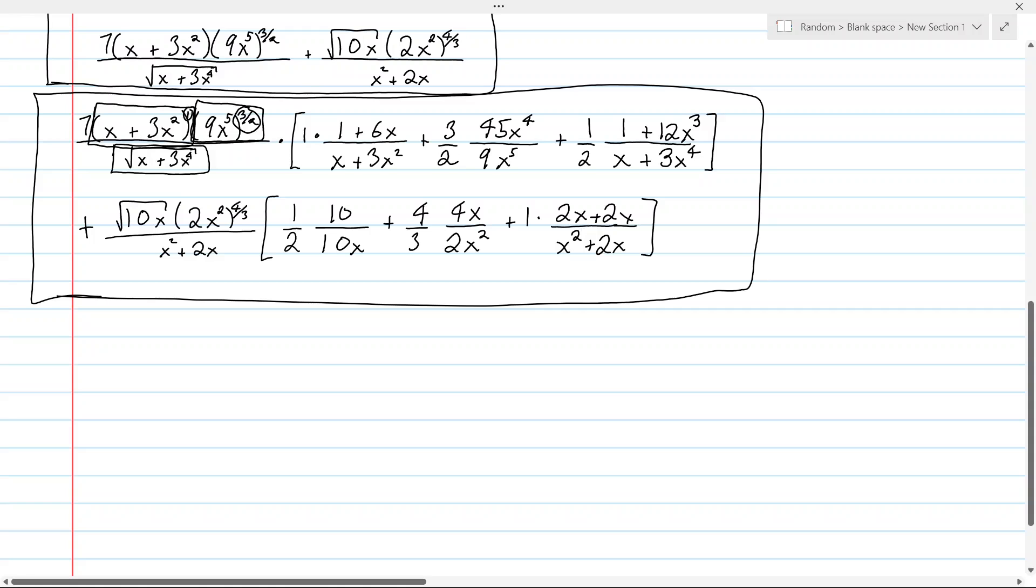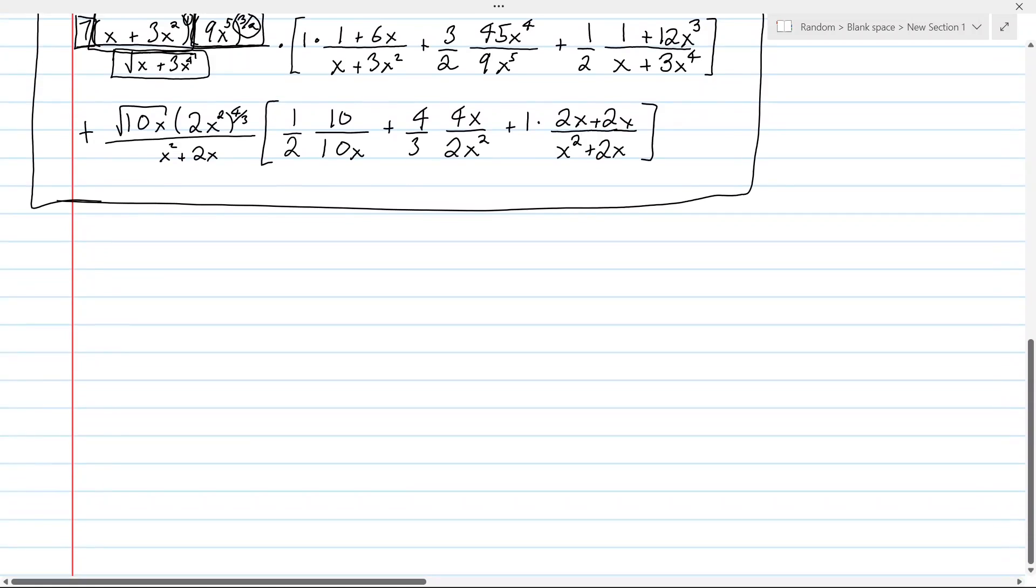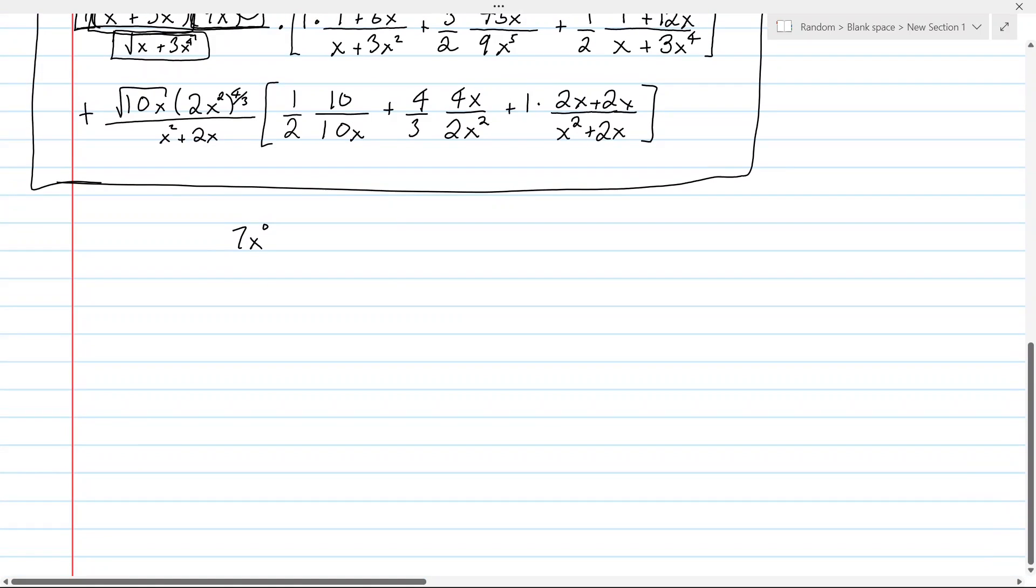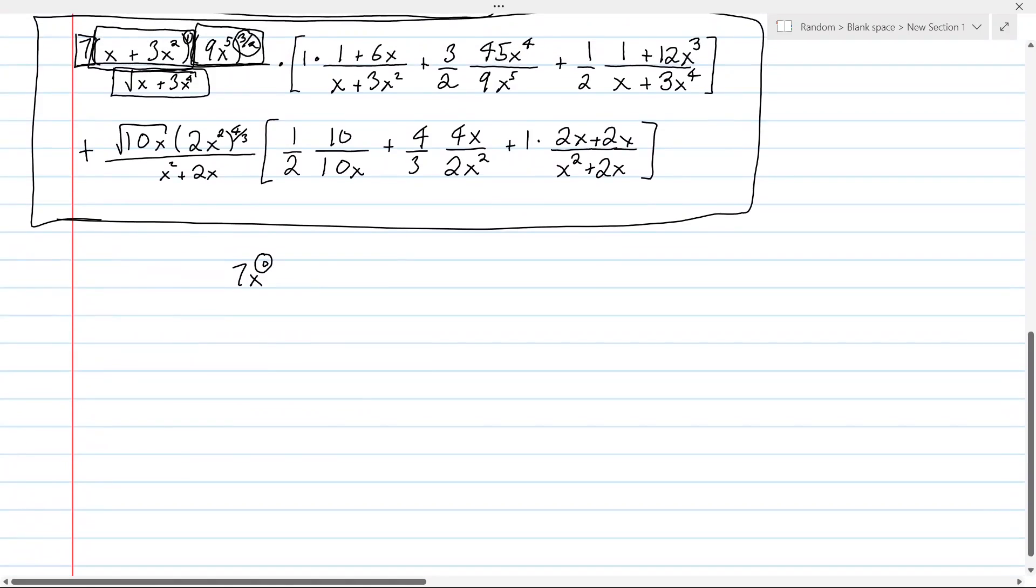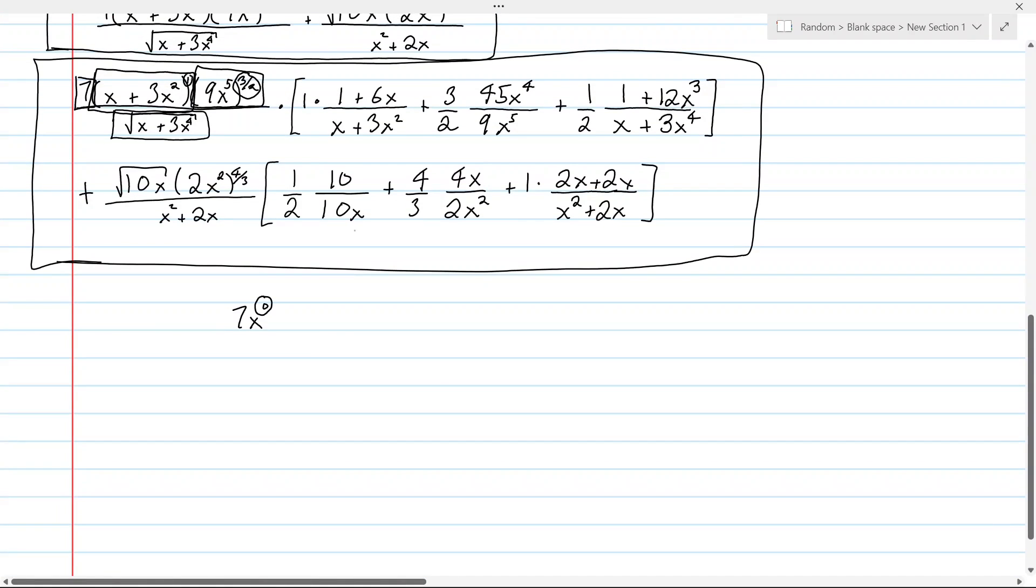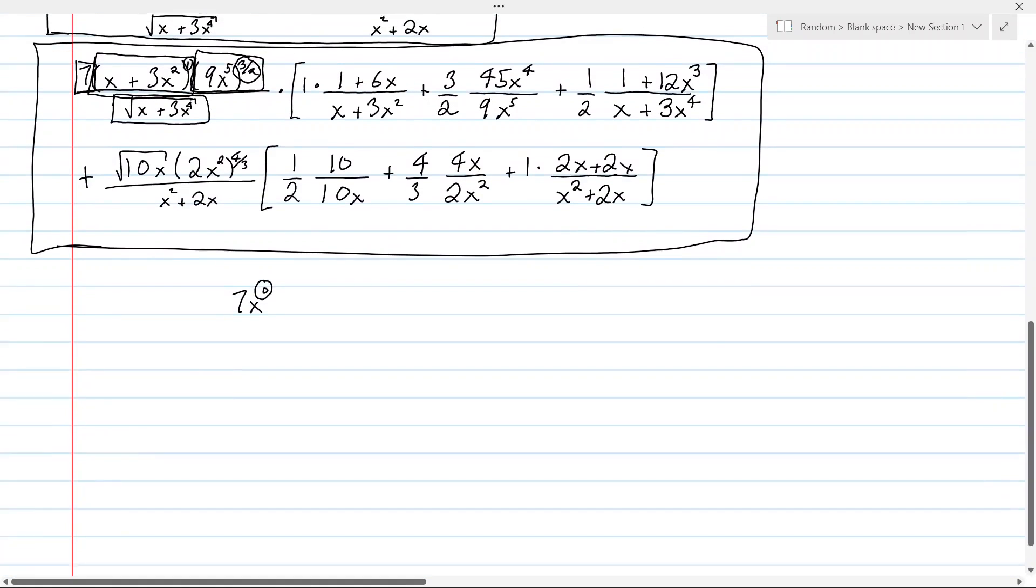Now notice I didn't use the 7. That's because I could have written the 7 as 7x to the power of 0. And because the power is 0, I'd be multiplying that term by 0 by following this scheme. So it wouldn't have contributed anything anyways.